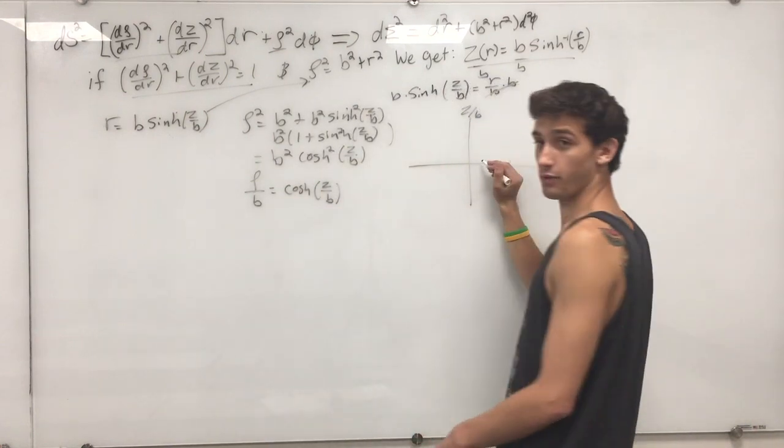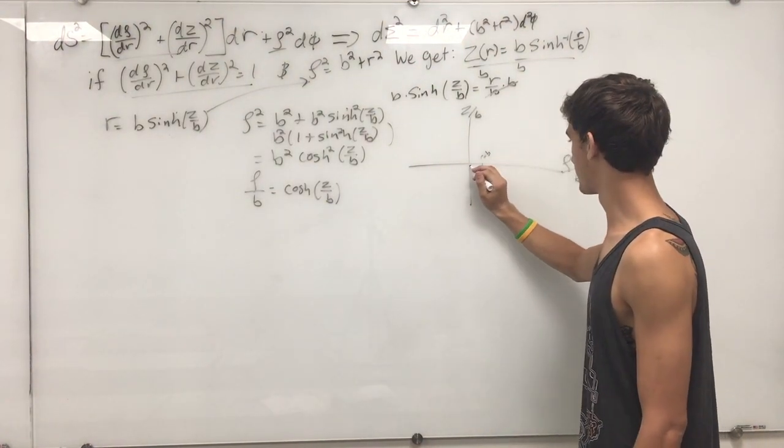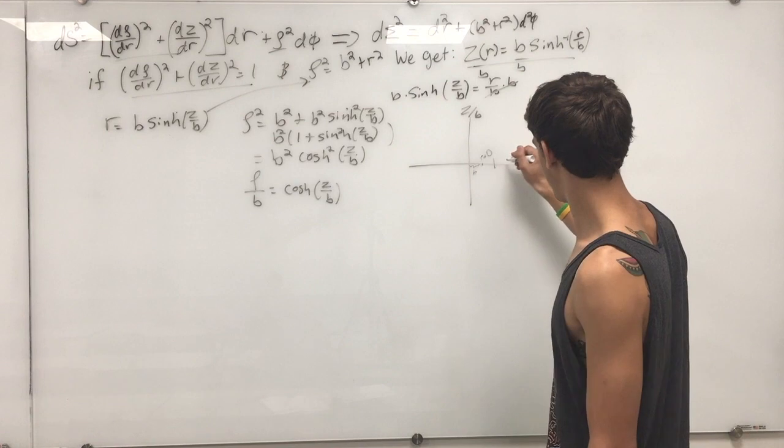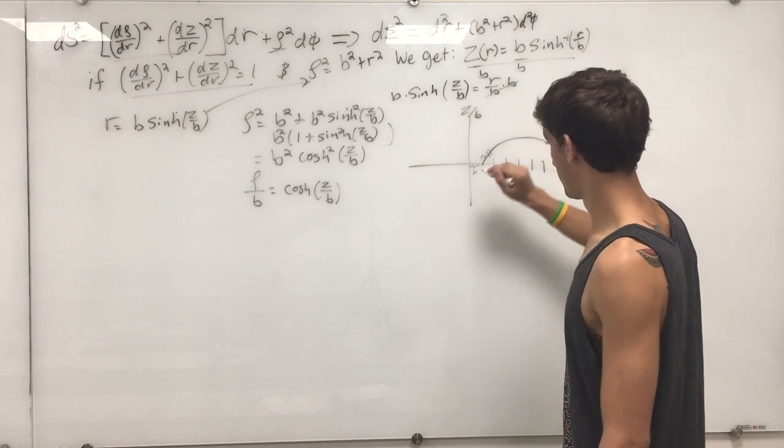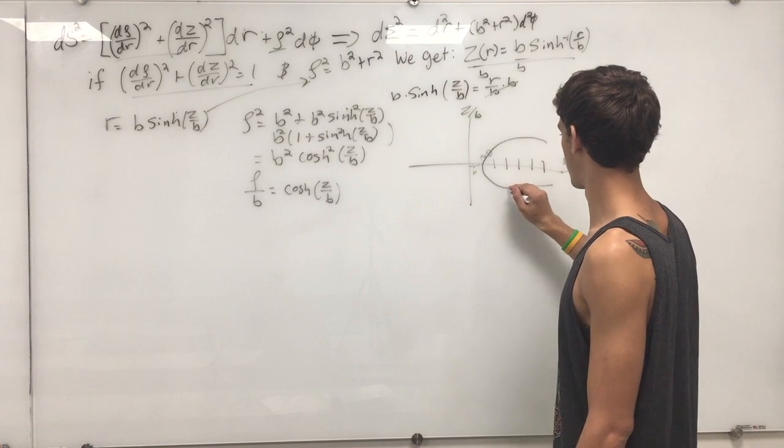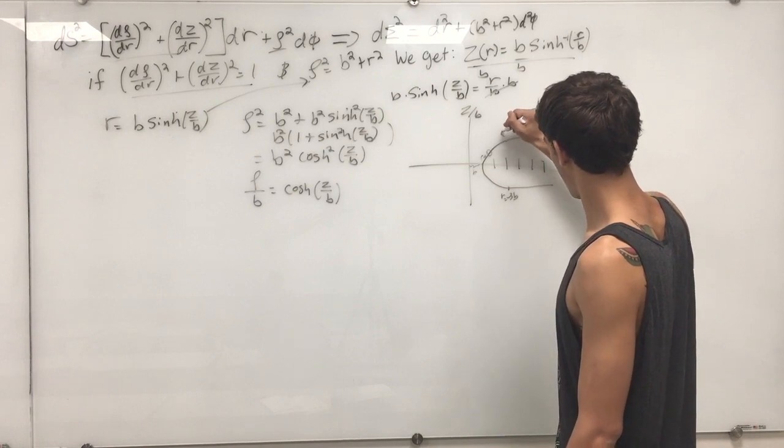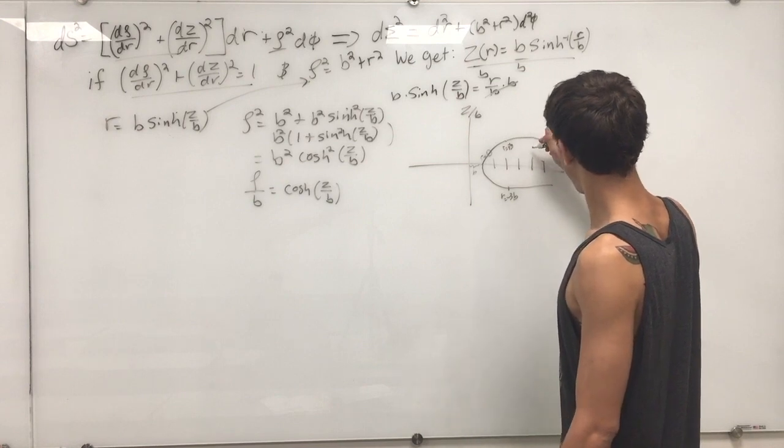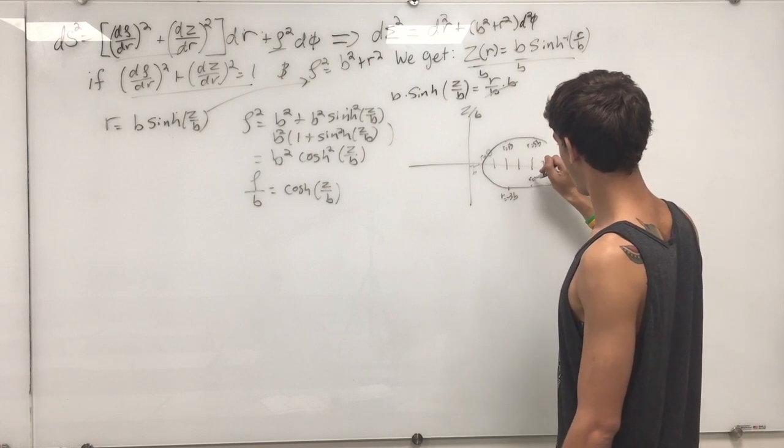So, we can start it where r is equal to zero. And it's just a distance b. And now, we draw the cosh function. Where this is just r equals 3b, negative 3b. This is r equals 5b, r equals negative 5b.